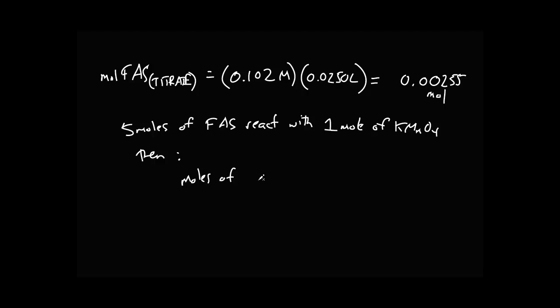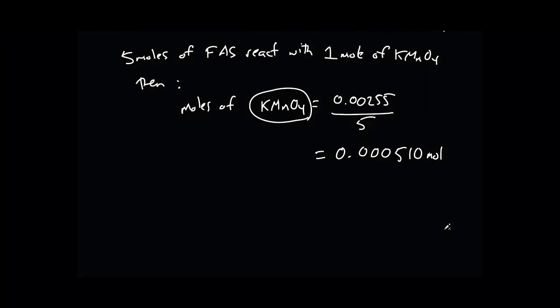0.00255 FAS divided by 5, because each one of these guys is going to eat up 5 irons for those 5 electrons. So the number of moles of KMnO4 we can figure out because it's 0.00255 moles of FAS divided by 5, so that's going to equal 0.000510 moles.